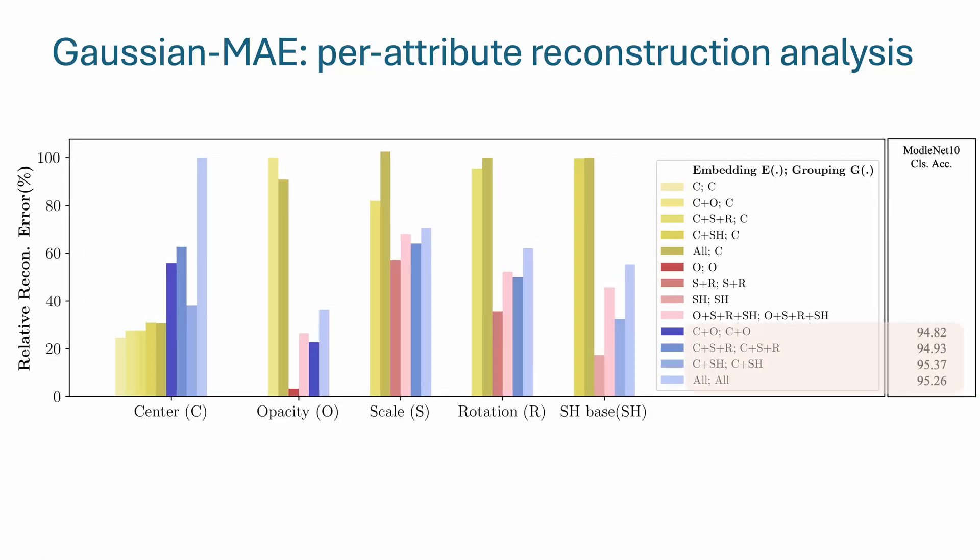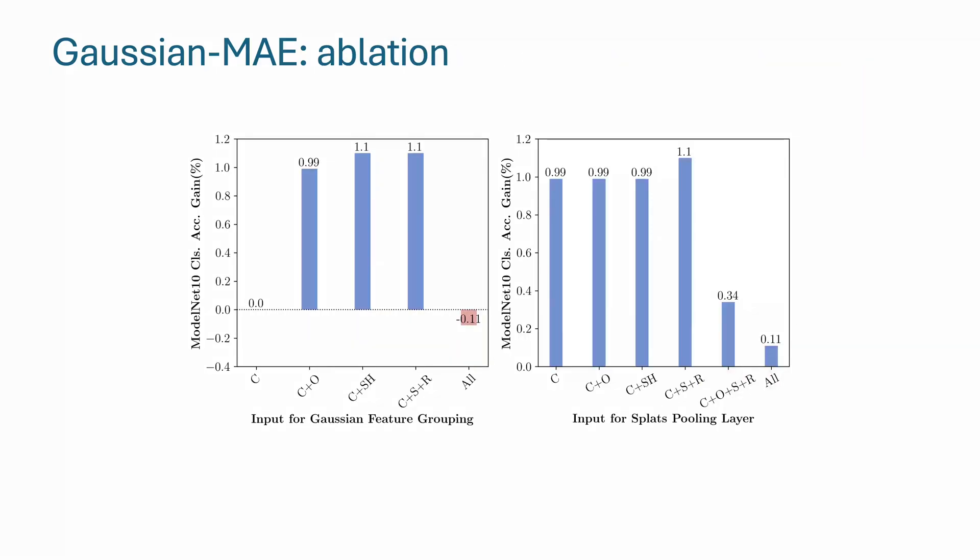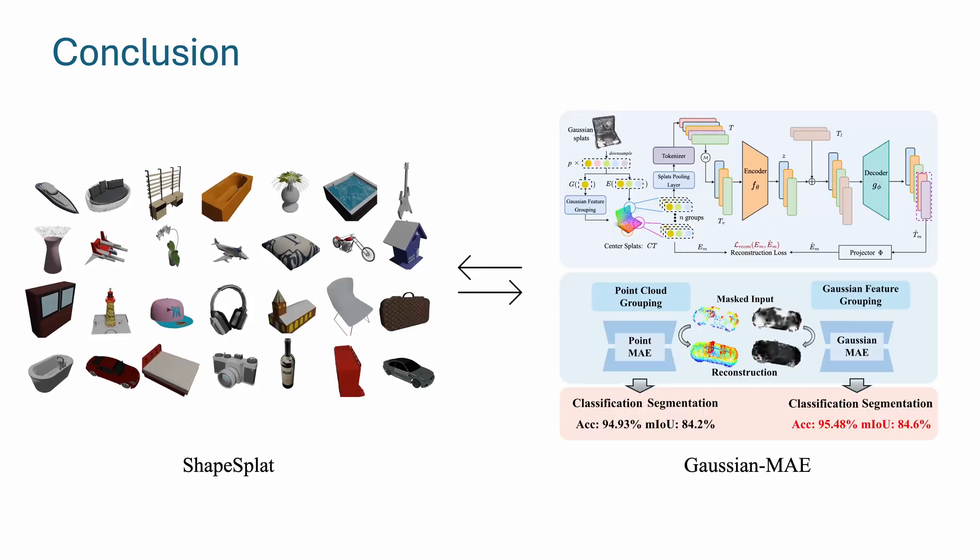And the better overall reconstruction leads to better downstream task performance. Next, as evident from the ablation results, both Gaussian feature grouping and splats pooling layer improve the classification performance compared to the vanilla Gaussian MAE.